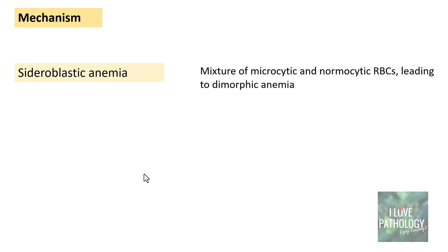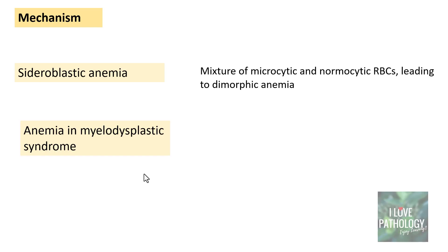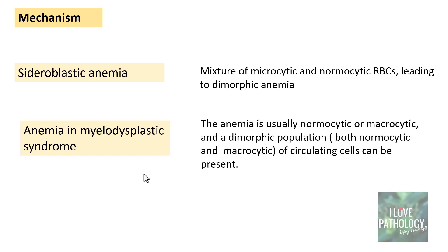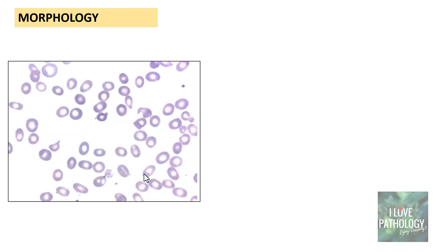Dimorphic anemia can also occur in sideroblastic anemia, where you find a mixture of microcytic and normocytic RBCs. Last but not least, you can find a dimorphic blood picture in some important myelodysplastic syndromes, where the population of cells is usually a mixture of normocytic normochromic RBCs along with macrocytes, giving rise to a dimorphic blood picture.